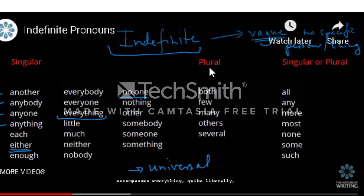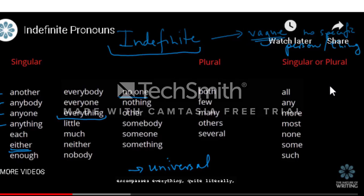The second group of indefinite pronouns are considered plural because they take a plural verb. For example, 'both students is or are' — of course the answer is 'are', because you're talking about both of them doing that action. Words like both, few, many, others, and several all take a plural verb because they are plural indefinite pronouns. We also have some indefinite pronouns that can be singular or plural depending on the noun they refer to. For example, 'all of the students are absent today' because students is plural, but 'all of the cake is eaten' because cake is singular.